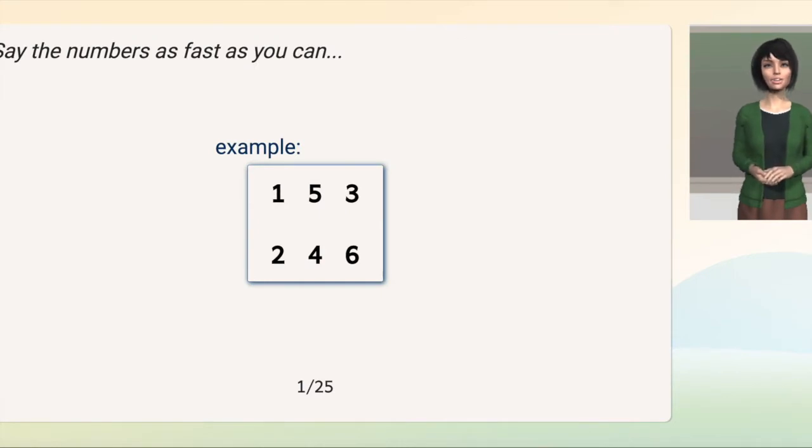I'm going to show you some things to name. For example, you may see some numbers like the ones on the screen now. You should say these numbers as fast as you can, going from left to right and top to bottom. So, you would say 1, 5, 3, 2, 4, 6. Okay, now it's your turn.